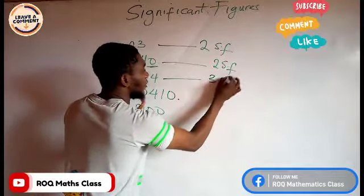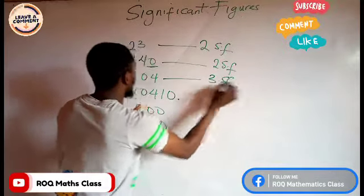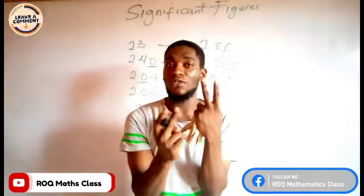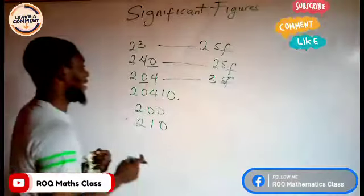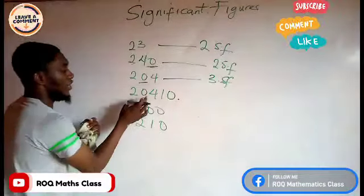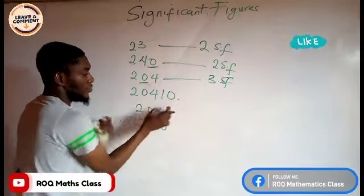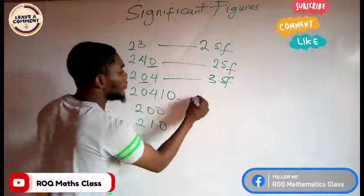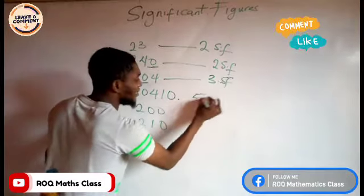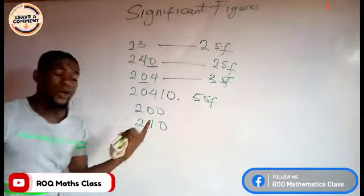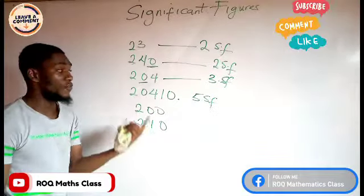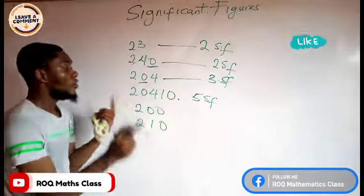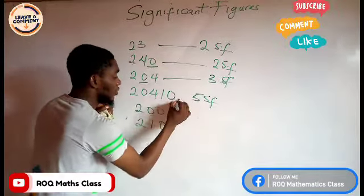So 240 has two significant figures. For 204, how many significant figures do we have? We have three significant figures, because the zero in between the two natural numbers is a significant figure. The next one, 30419 — how many significant figures? One, two, three, four, five — we have five significant figures.